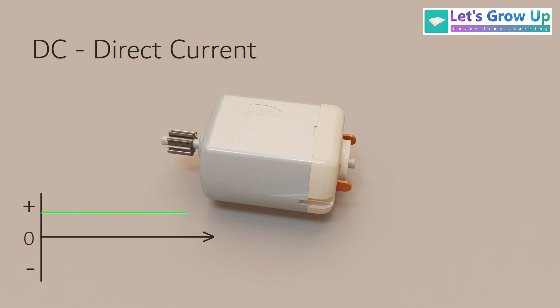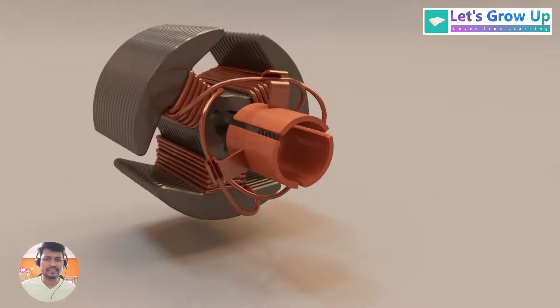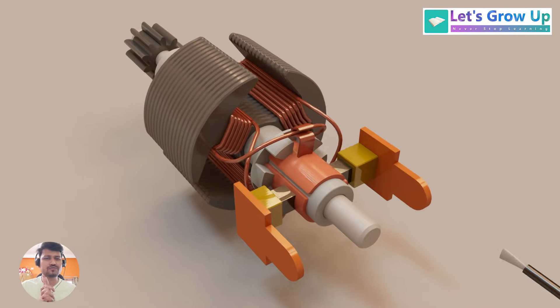On the other hand, AC is entirely different. AC alternates its direction, whereas DC flows in only one direction. This video focuses only on the internal parts and working function of a DC motor.